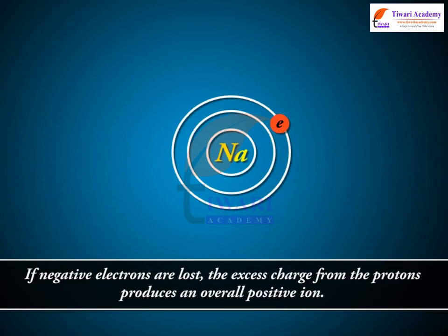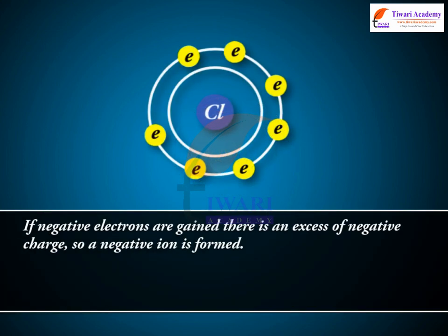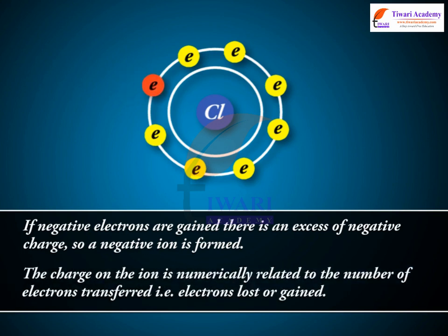If negative electrons are lost, the excess charge from the protons produces an overall positive ion. If negative electrons are gained, there is an excess of negative charge, so a negative ion is formed.